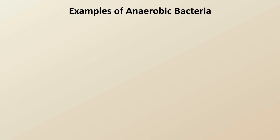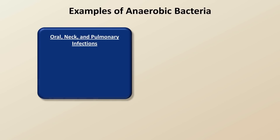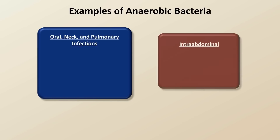Aside from their brief mention in lecture 1 on the classification of bacteria, I have not discussed anaerobic bacteria in too much detail. For the most part, anaerobic infections can be divided into two general categories: infections of the oral cavity, deep spaces of the neck and the lungs including the pleural space, and intra-abdominal infections.